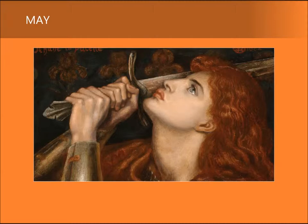Rossetti had earlier painted several versions of the valiant peasant girl. In his last work, the artist depicts the courageous young woman about to kiss the tightly gripped hilt of her sword. Through this action, she speaks her vow to God to defeat the English army during the conflicts of the late 1400s. As she lifts her gaze heavenward, Joan's fierce determination finds expression in her resolute pose. Rossetti, renowned for his series of paintings of famous women, casts Joan as a decidedly romantic heroine.